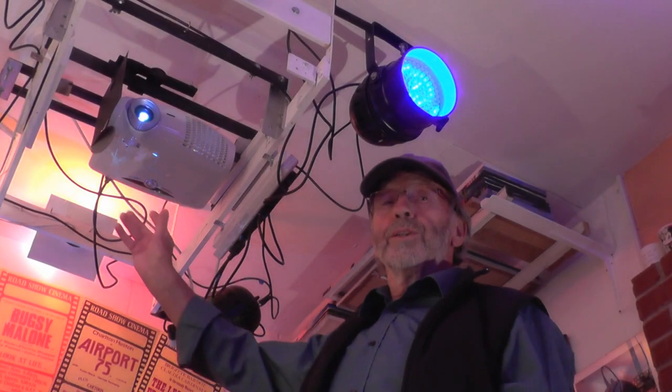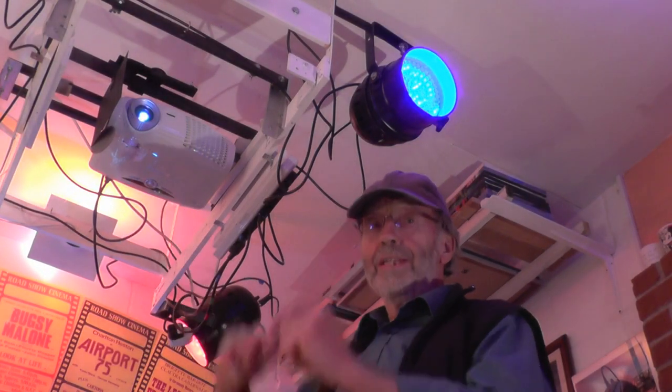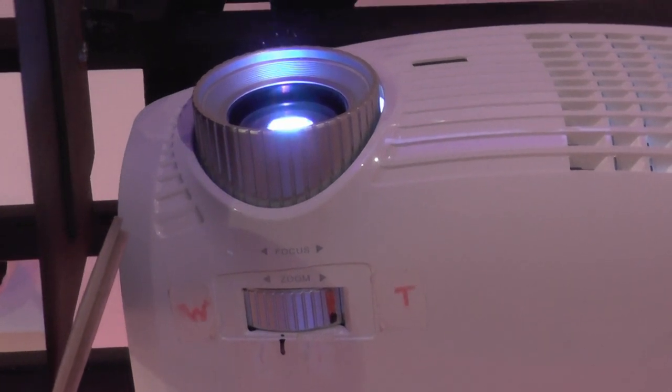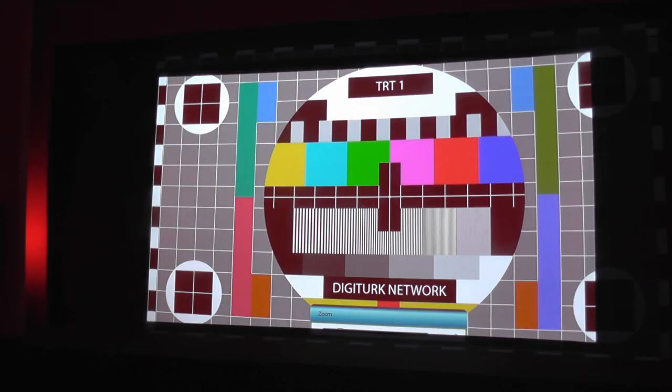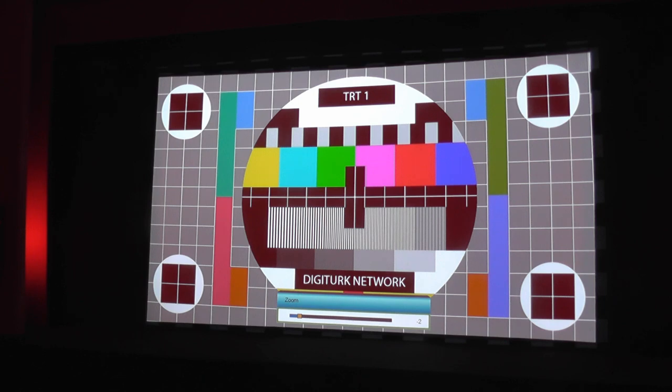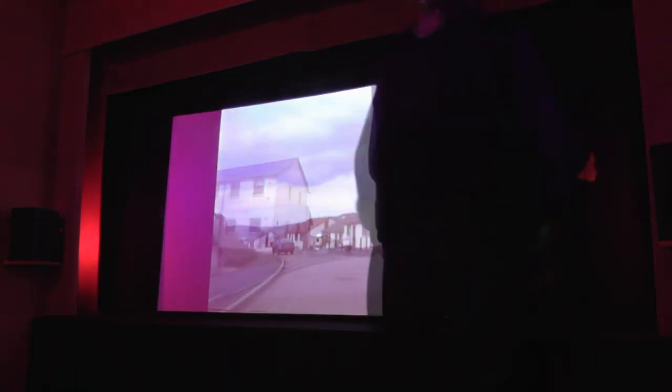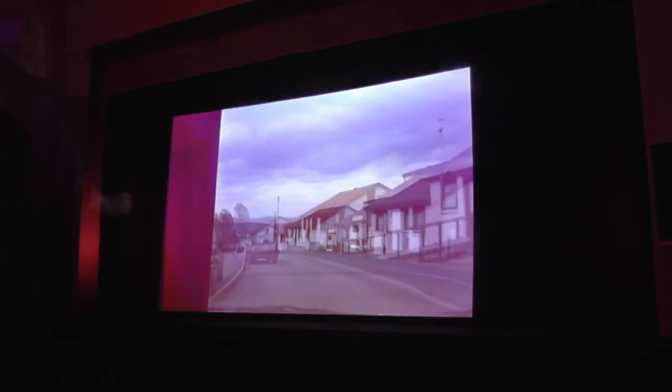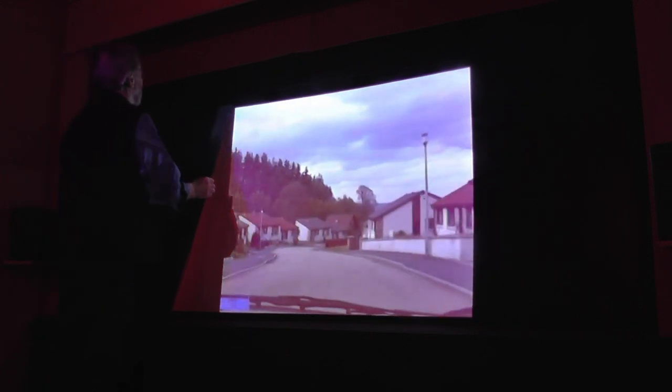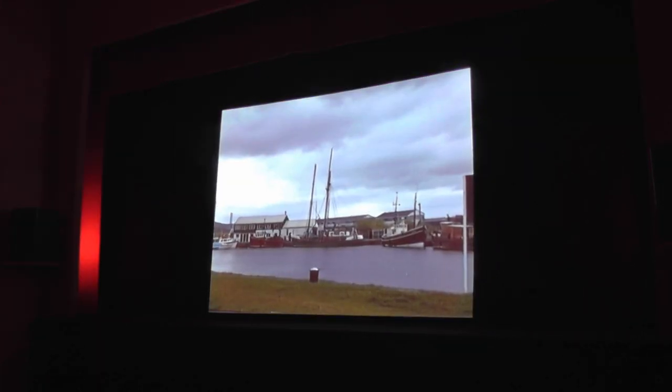The projector here is at the forward position and the lens is set to the long focus. The digital zoom is set to minus three. Now this enables the full frame to be projected onto the smaller screen. I add additional masking for the 1.33 ratio. This is ideal for old videos and 8-notes.